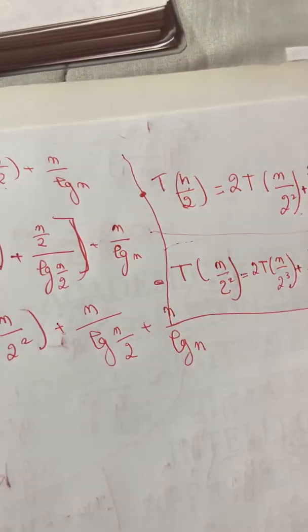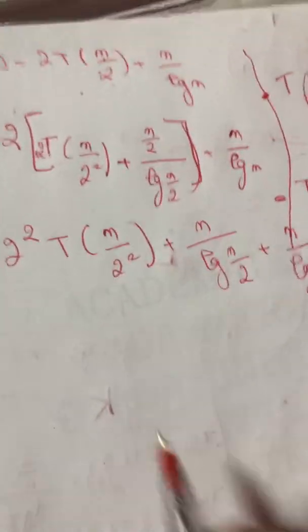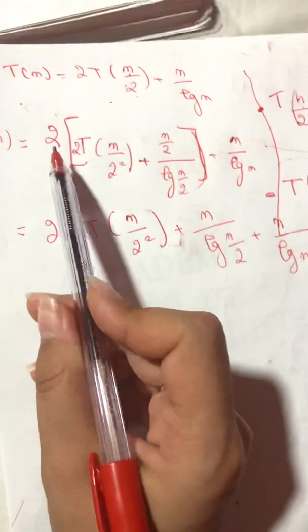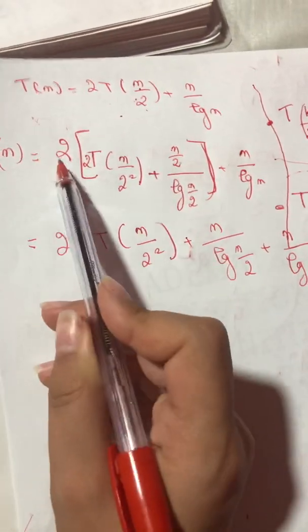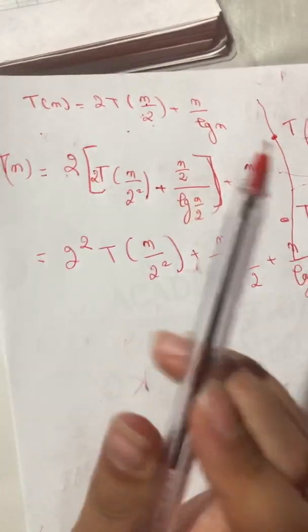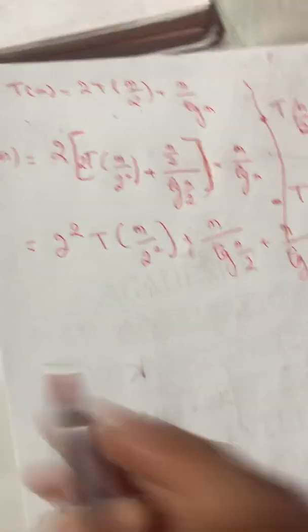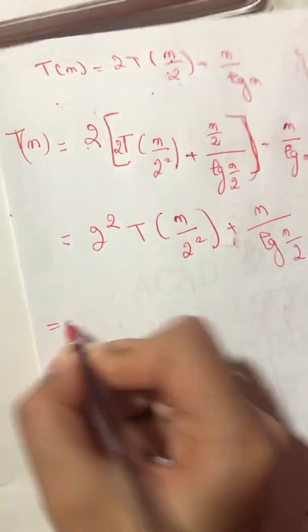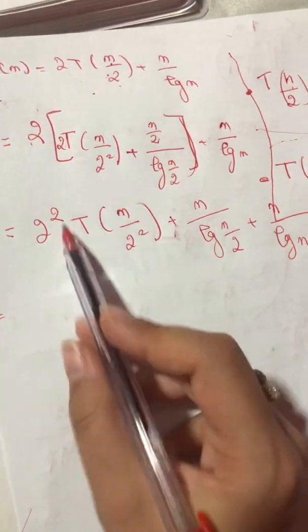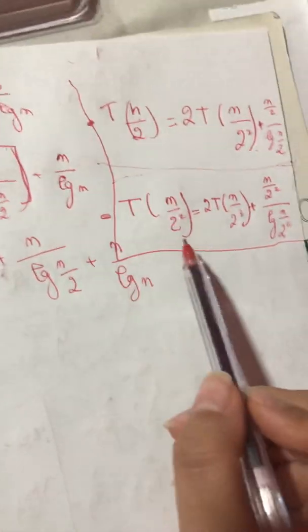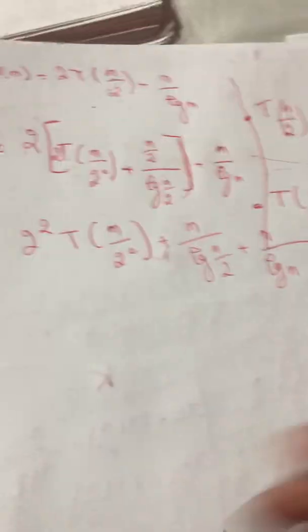I divide this 2 with this 2, so no 2 anymore in this fraction. Now I want to substitute the T(n/2^2) by this one I've already written.